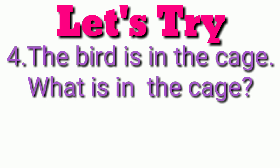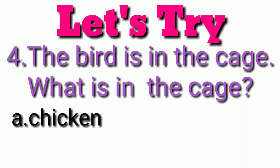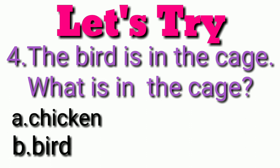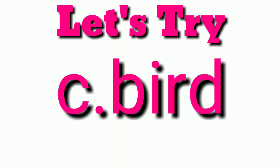Number four: the bird is in the cage. What is in the cage? A, chicken. B, bird. C, dog. The answer is bird.